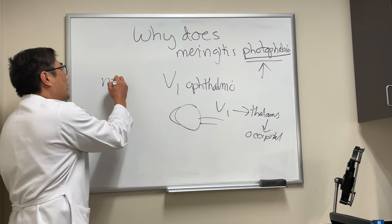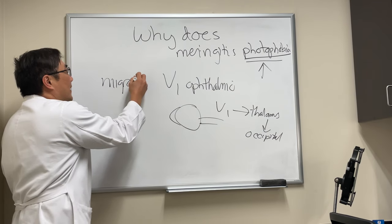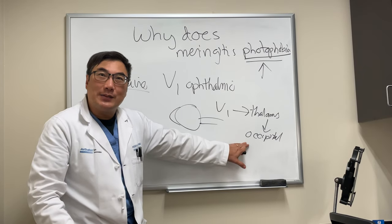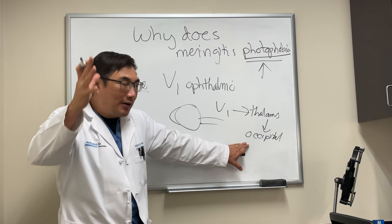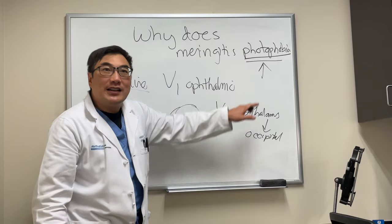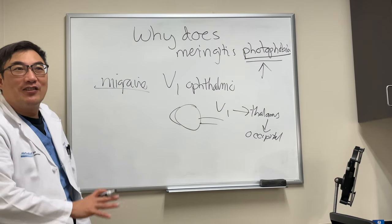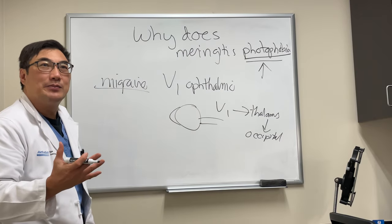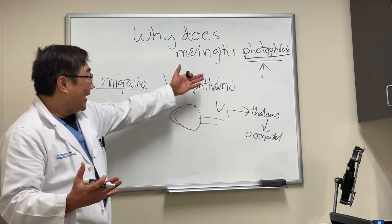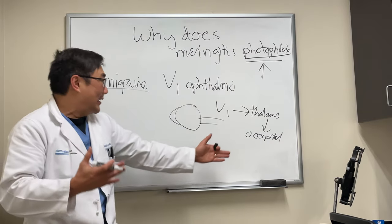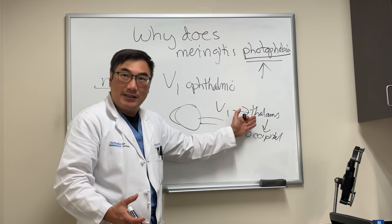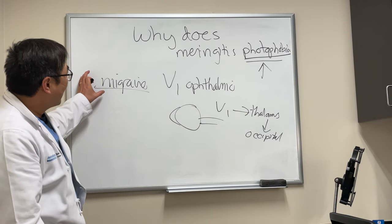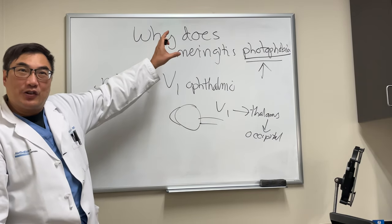For example, patients who have migraine have headache and might have an aura from the occipital — a spreading depression of Lao. These patients are often photophobic and have to go lie down in a dark room, because that trigeminal-thalamic-occipital pathway is being activated. The light itself can stimulate pain in the thalamus and the occipital, causing the migraine to occur.